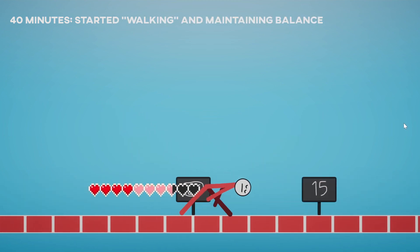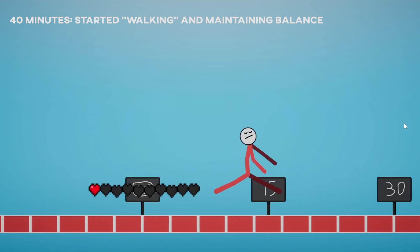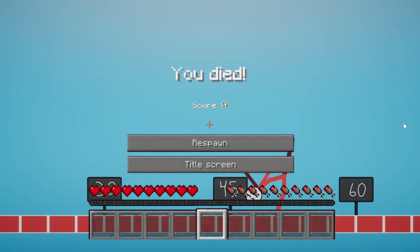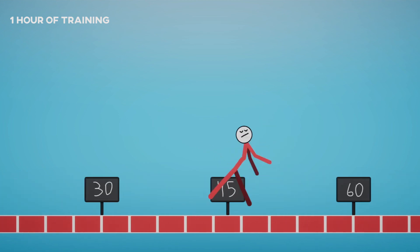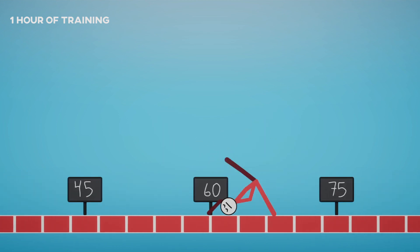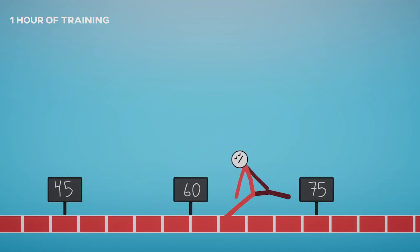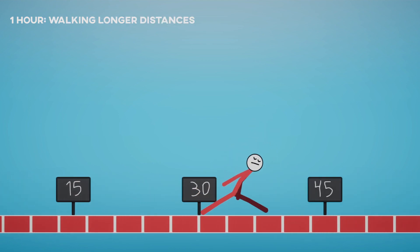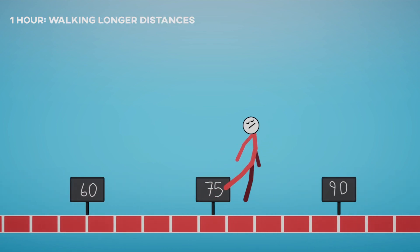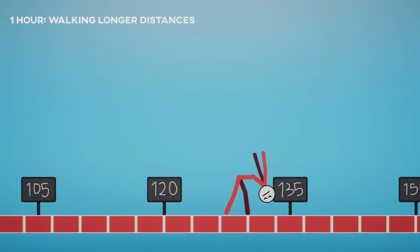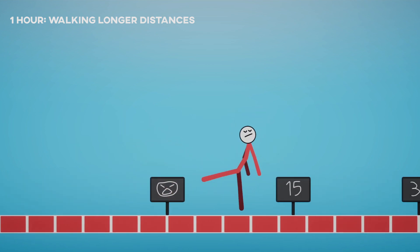40 minutes in, and it finally started to understand that in order to walk, you need to keep your balance. 1 hour, and it's finally able to walk longer distances without falling. It is still really clumsy though, so I'm just going to show you the results after 2 hours.